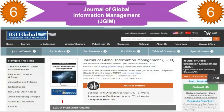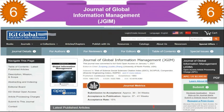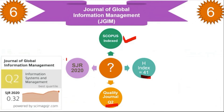The last journal I am highlighting is the Journal of Global Information Management, also published by IGI Global. Information is available on their page. I verified everything: it is Scopus-indexed, the H-index is quite high at 41, the journal quality is very good, and the SJR 2020 value is 0.32. If your research is related to information systems and management, this is a suitable journal for you.